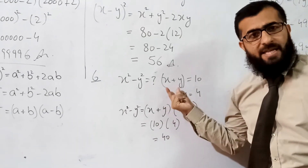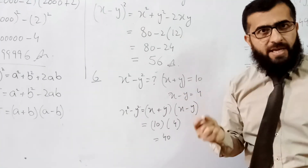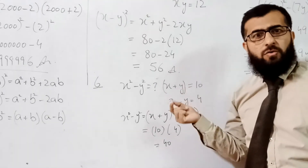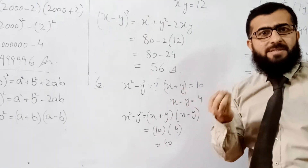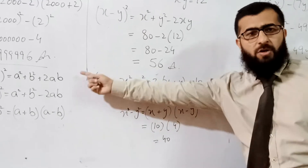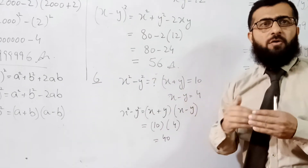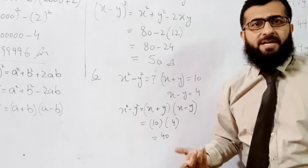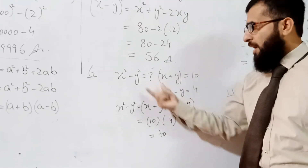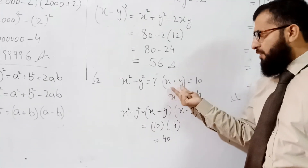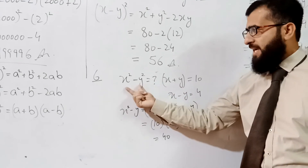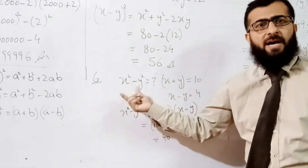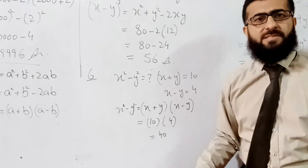The values x + y, x − y, and x² − y² are all present, so we apply the third identity. Using the third identity and the given values, we find the answer.